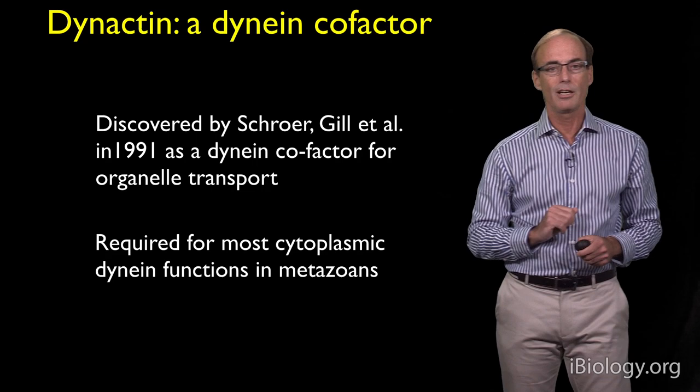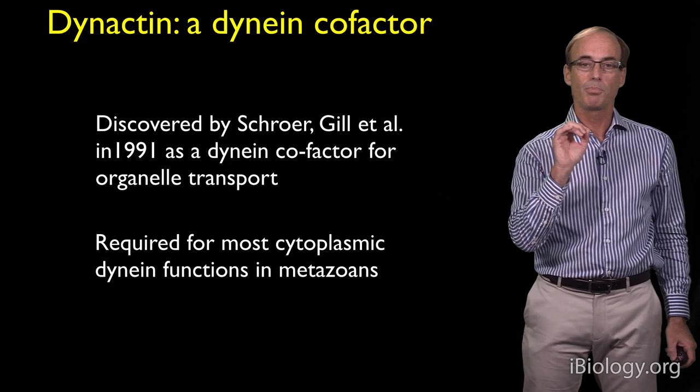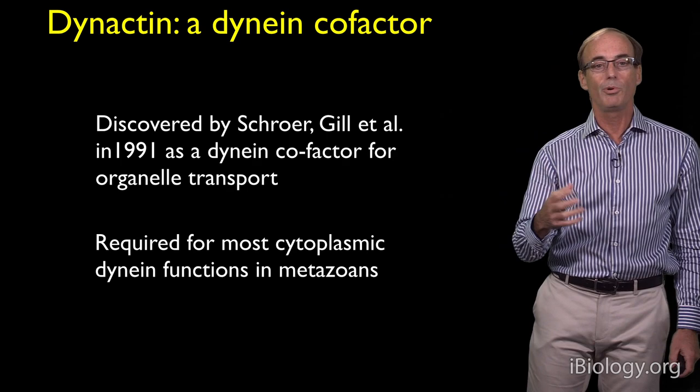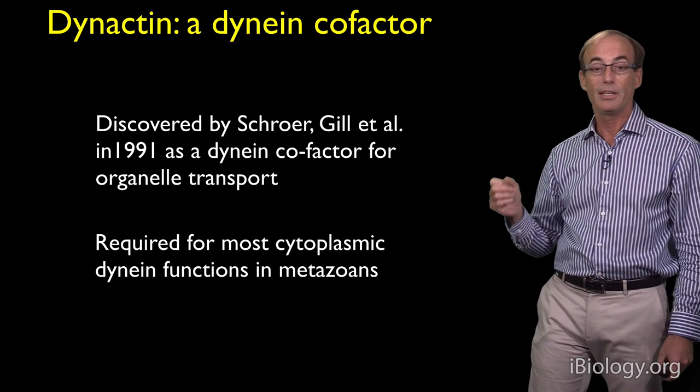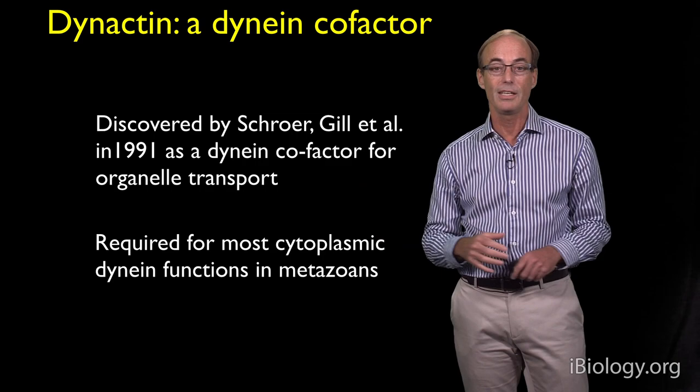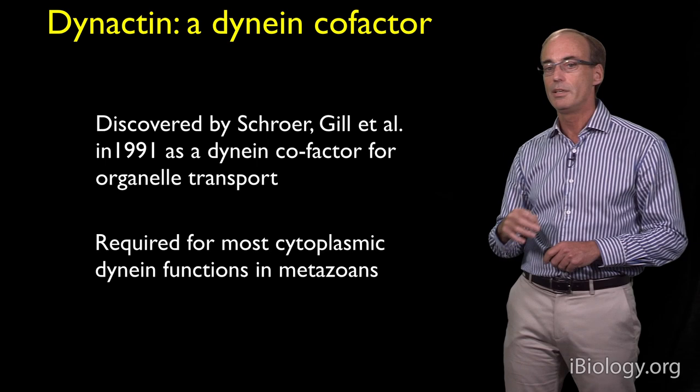We began to test this latter possibility. A good candidate for that missing factor was a protein complex known as dynactin. Dynactin was discovered many years ago by Schroer and colleagues as a cofactor that would stimulate organelle transport by dynein. Subsequently, it's been found that dynactin is required for many functions of cytoplasmic dynein. Effectively, a knockout of dynactin produces a very similar phenotype to knocking out dynein itself, so it seems to be involved in many kinds of dynein functions, although the exact role of dynactin has not been entirely clear.